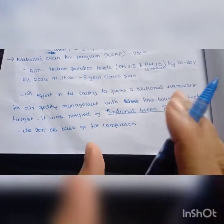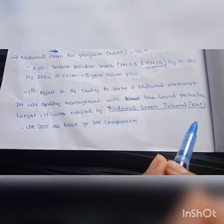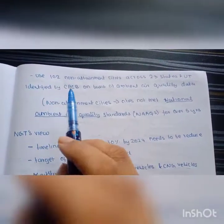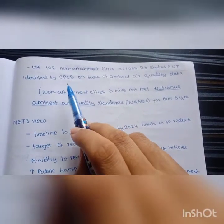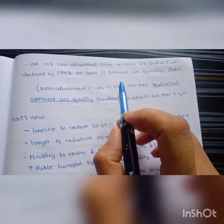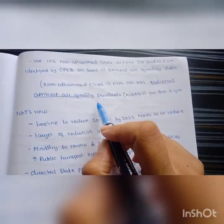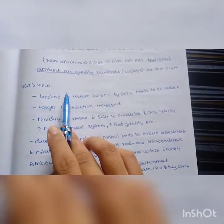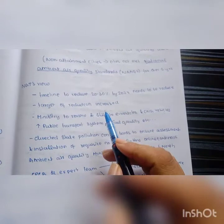This is the first national framework, a time-bound national framework for air quality management. National Green Tribunal has set this as base year. The Central Pollution Control Board has identified cities based on National Ambient Air Quality Standards as non-attainment cities. Target to be reduced by 2024.